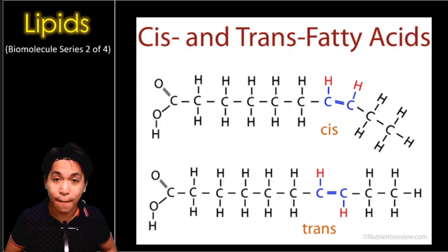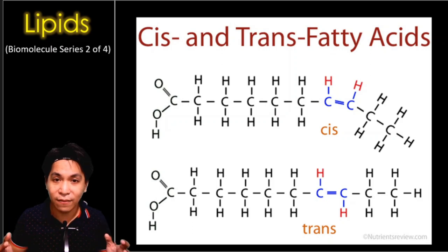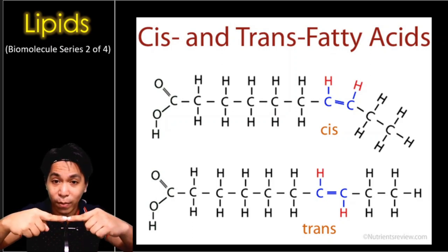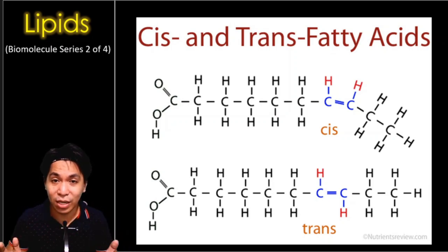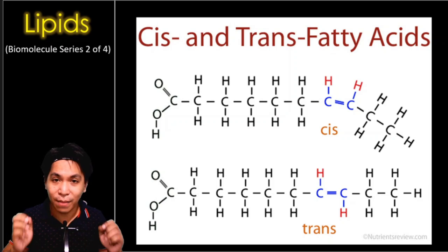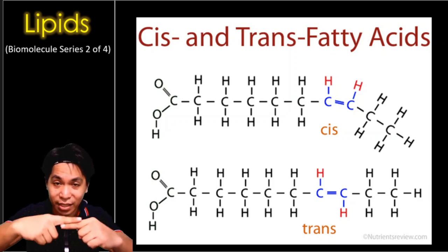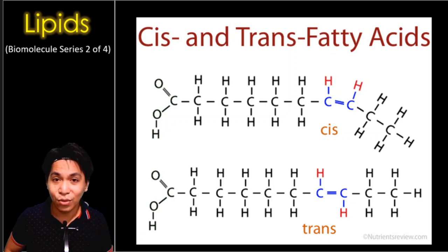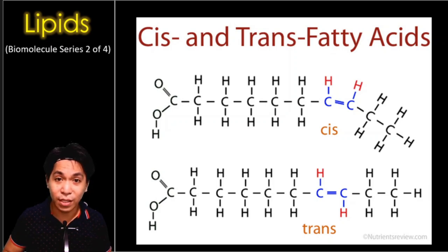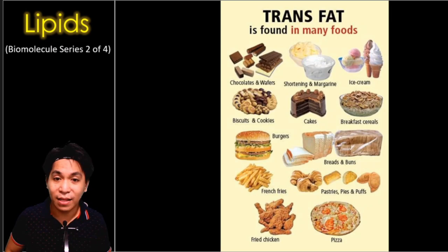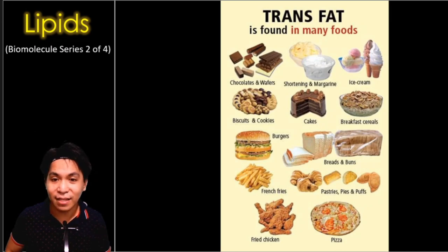What makes trans fat bad for us? You've learned in organic chemistry that breaking double bonds is harder than breaking single bonds. So imagine a molecule which is straight with a double bond — if packing saturated acids makes them solid, imagine how hard it is to break apart a molecule that is straight and has a double bond. You can just imagine how difficult it is for our body to break those fats. Sources of trans fats include wafers, biscuits, cakes, cereals, burgers, breads, french fries, pastries, pizza, fried chicken, and a lot more.